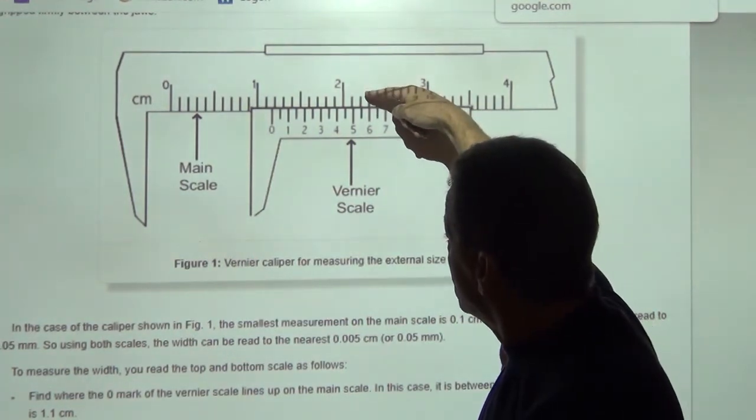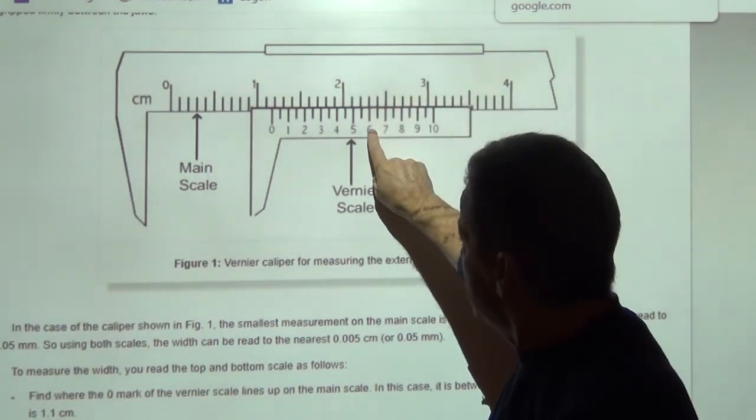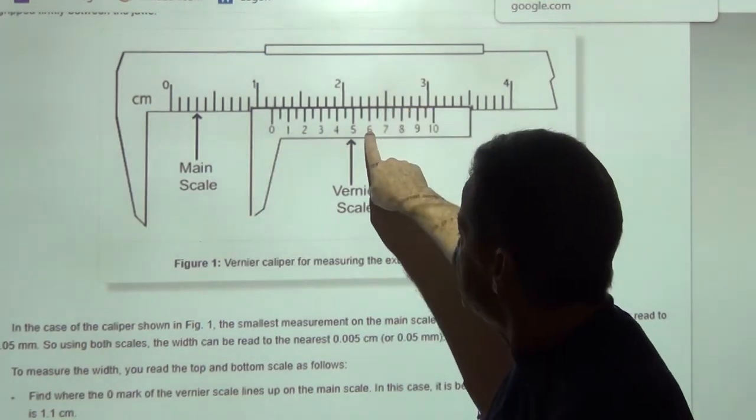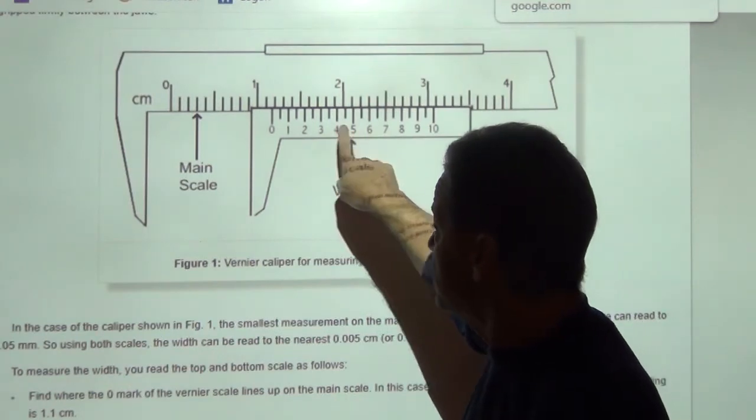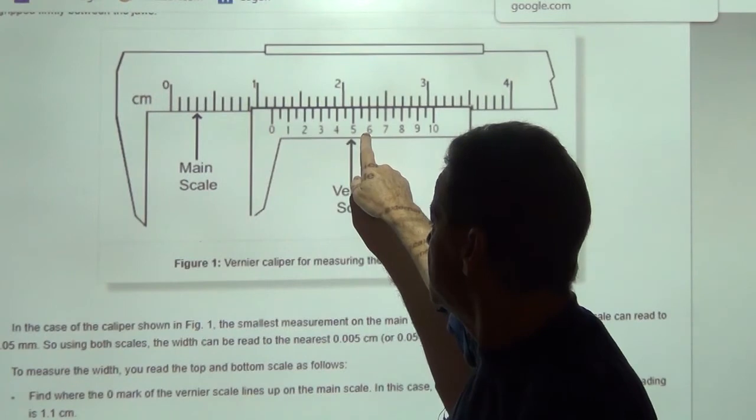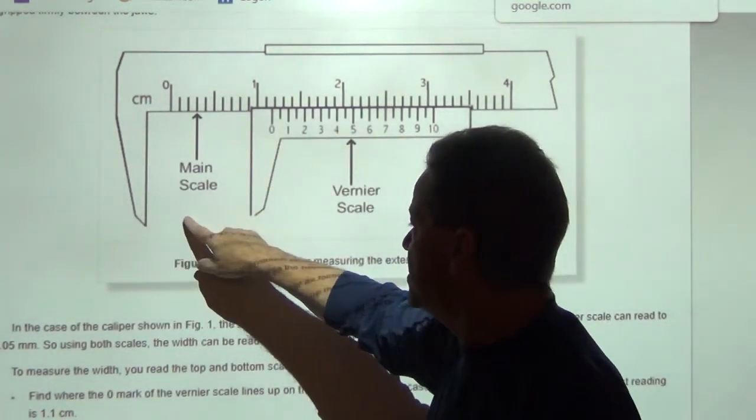But the fact that the six lines up pretty much perfectly with that line means that six is the reading here. Okay? So that tells us it's 1.16 centimeters, this distance right here.